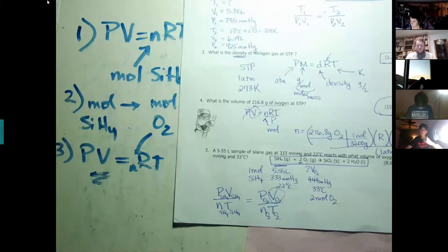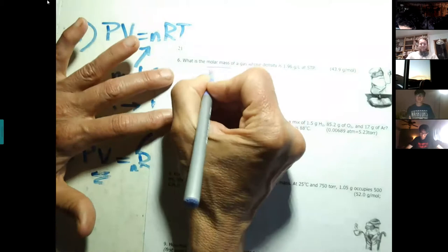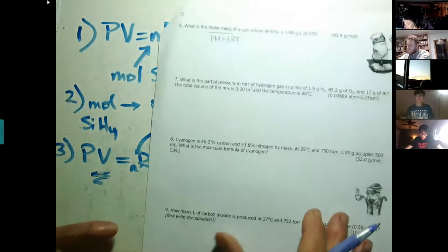Problem 6 asks for molar mass — so use PM = DRT. Whenever a question asks for molar mass, PM = DRT is the formula to use.